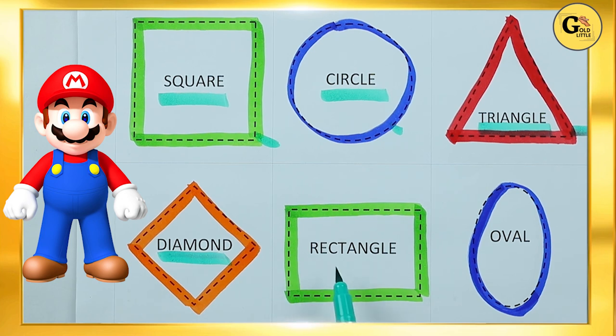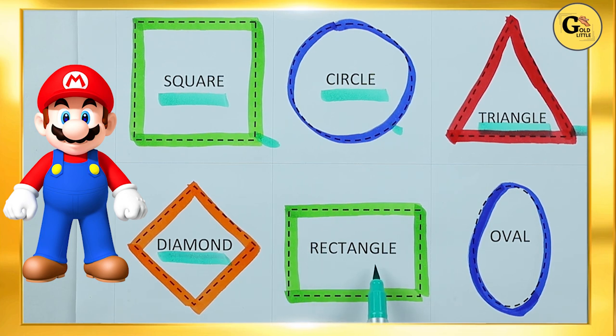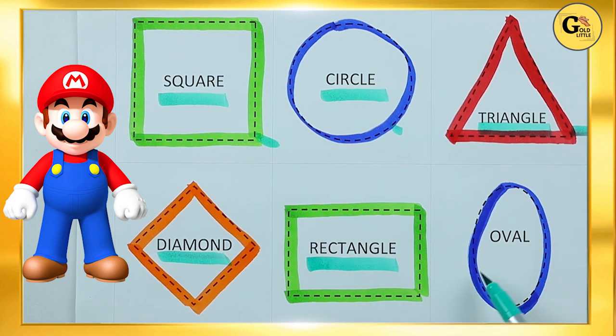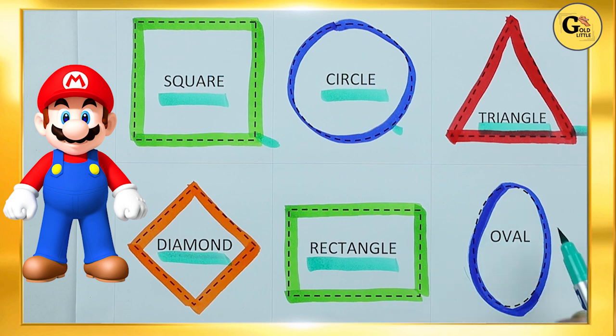Which shape is this? Rectangle. R-E-C-T-A-N-G-L-E. It's a rectangle with green color. Which shape is this?